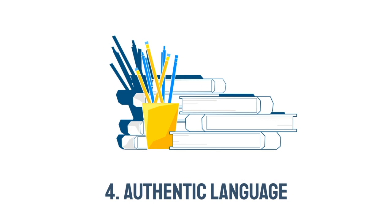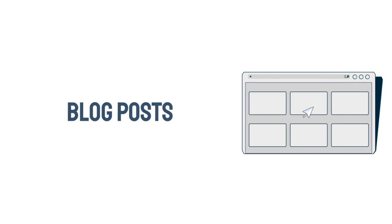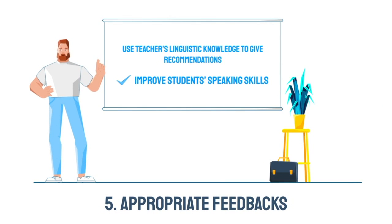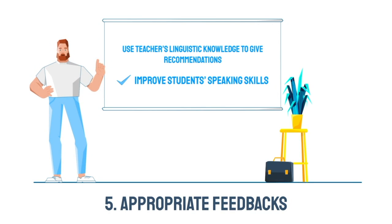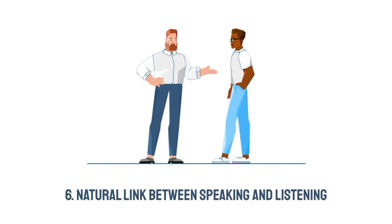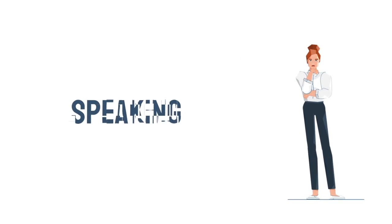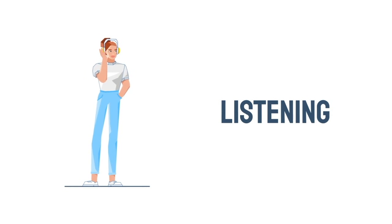Number four: encourage the use of authentic language in meaningful contexts. Authentic language is simply the communication of real messages as opposed to artificial practices and drills. For example, instead of using traditional material, you could make use of real-life-based sources such as journals, articles, blog posts, and novels. Number five: provide appropriate feedback. When learning a foreign language, students obviously rely on their teacher for the most effective linguistic source of feedback. The teacher's recommendations will mean a lot as a way to improve their speaking skills during class sessions. Principle number six: capitalize on the natural link between speaking and listening. There are a number of communication methods that require both speaking and listening. Thus, teachers should place an emphasis on the natural link between speaking and listening skills during class time.